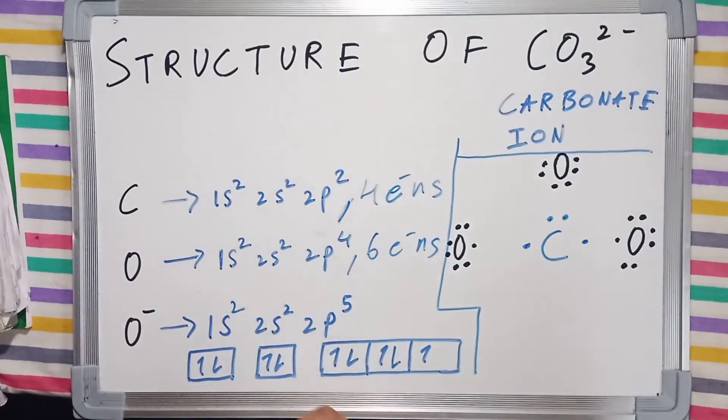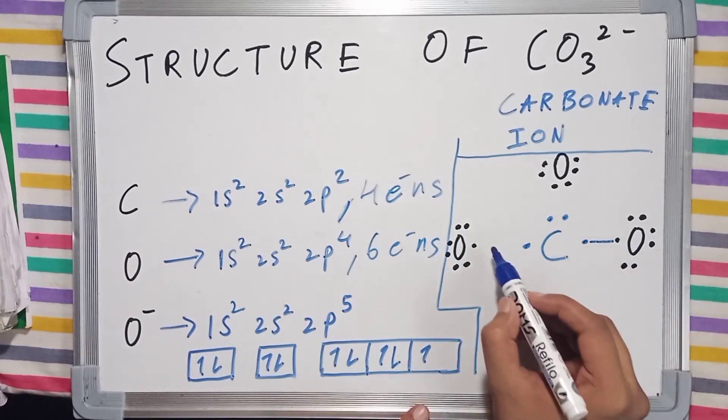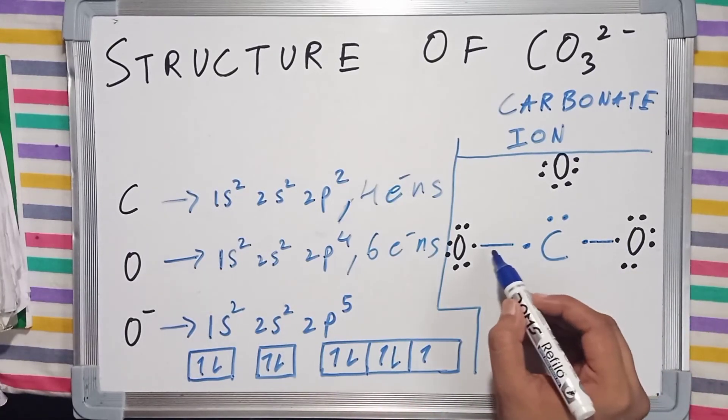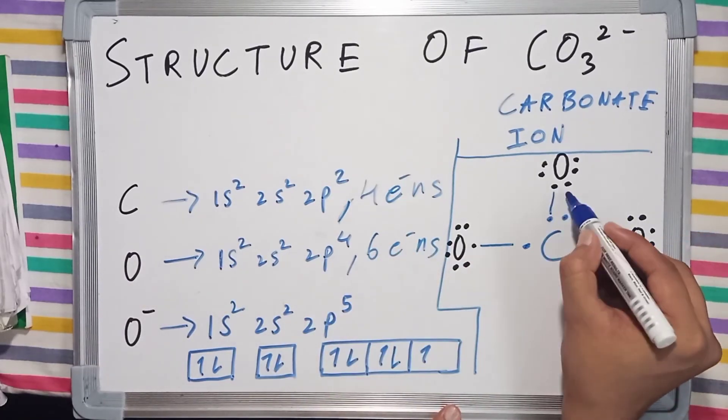Now let's draw the bonds: a single bond on the left side of carbon, another single bond, and then a double bond.